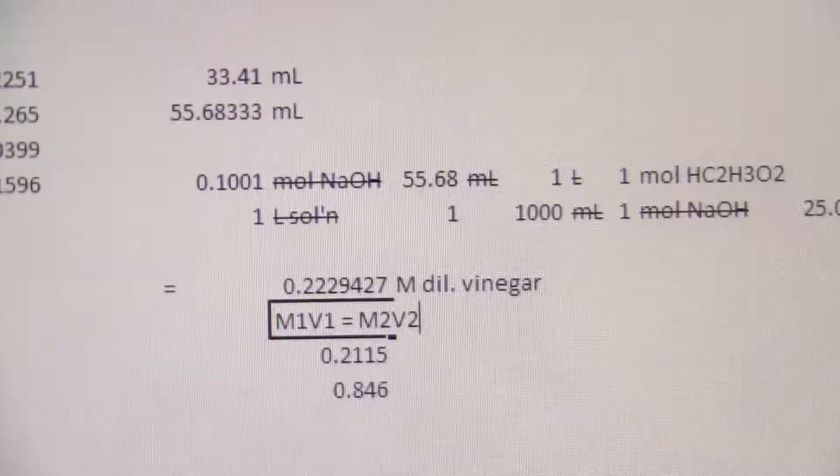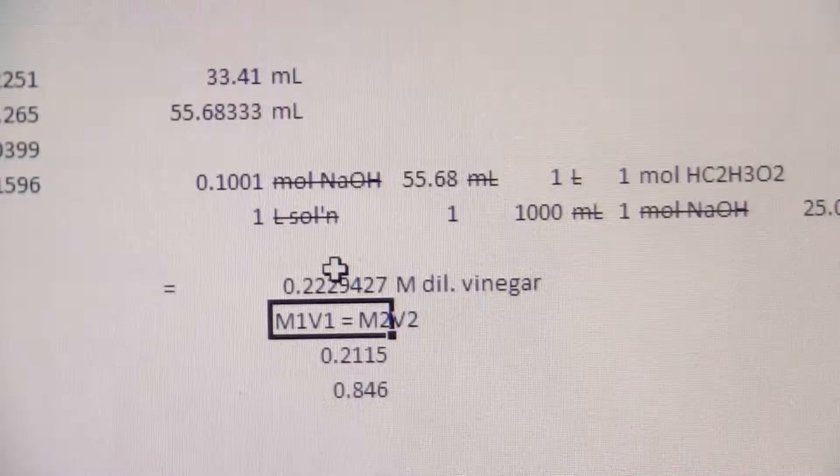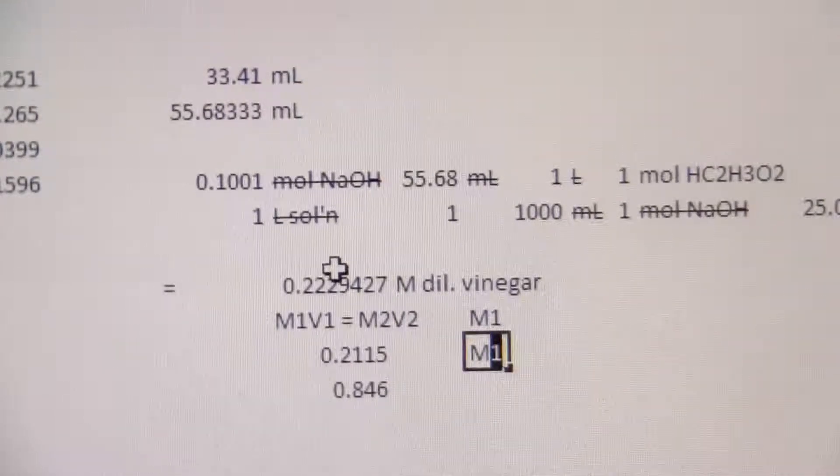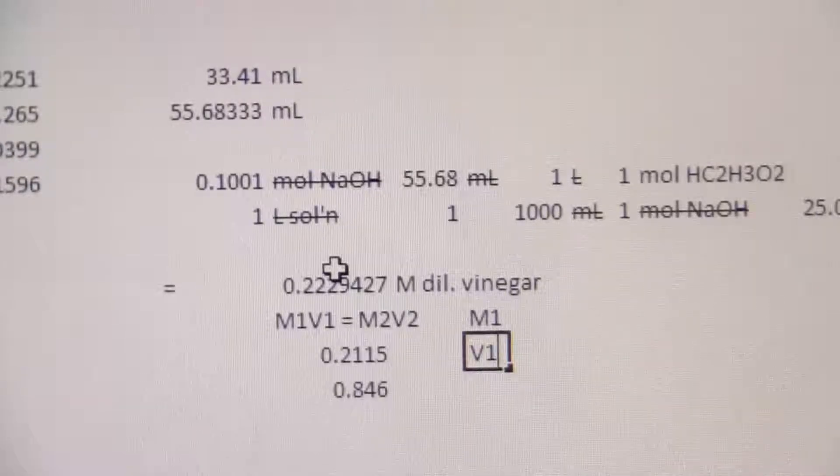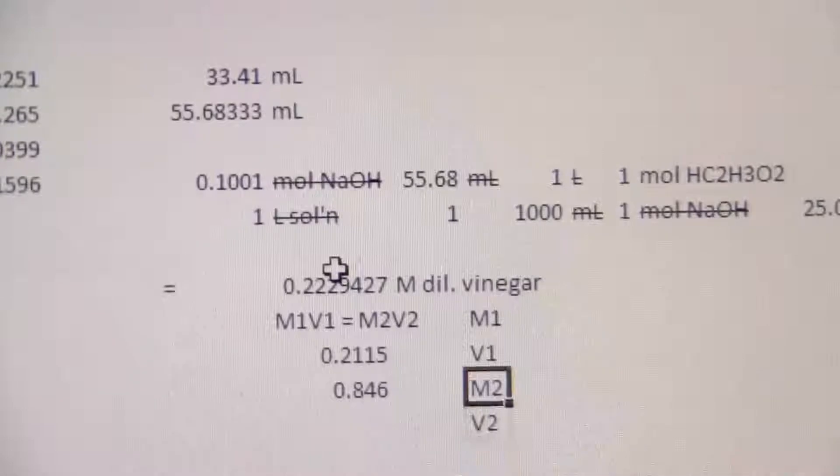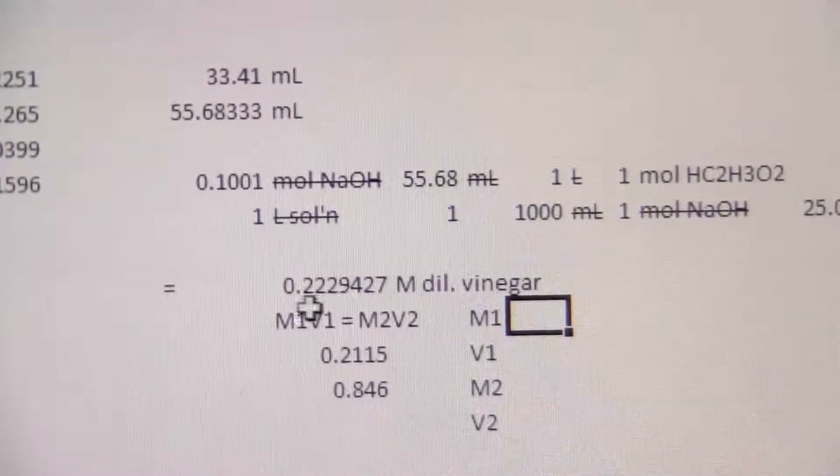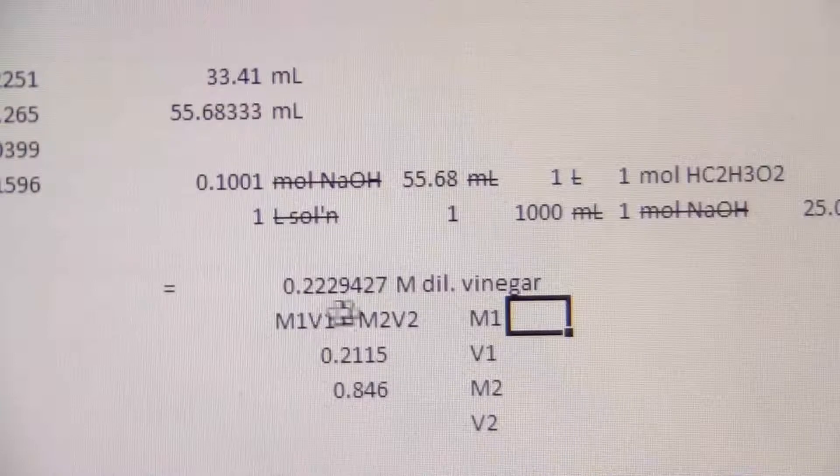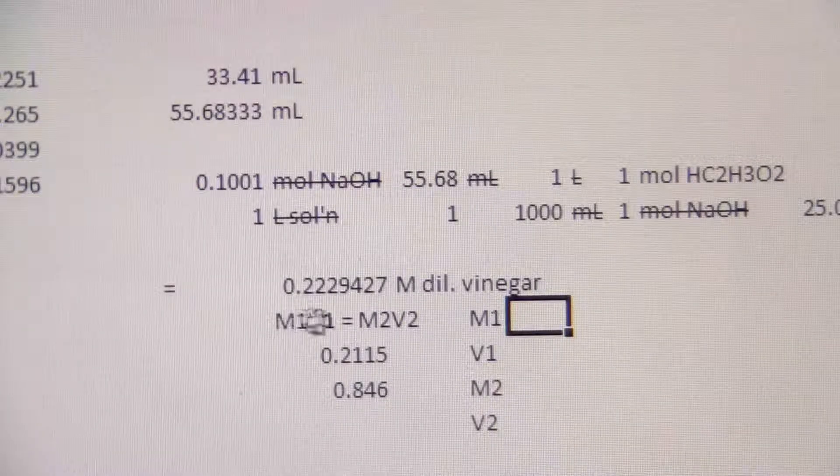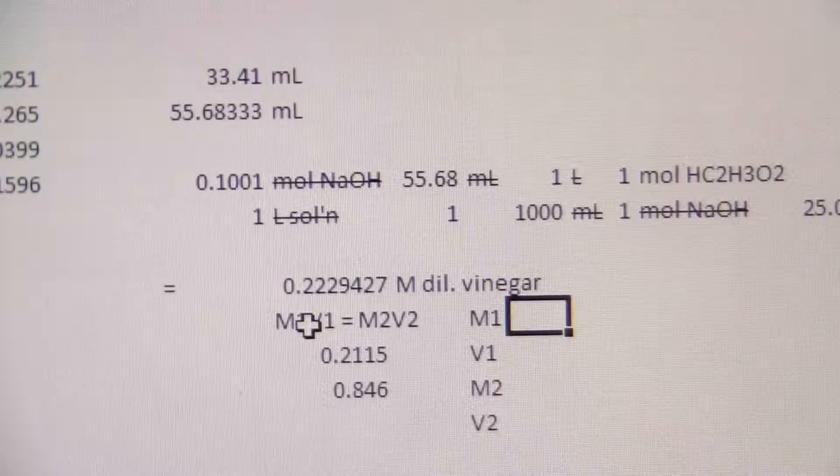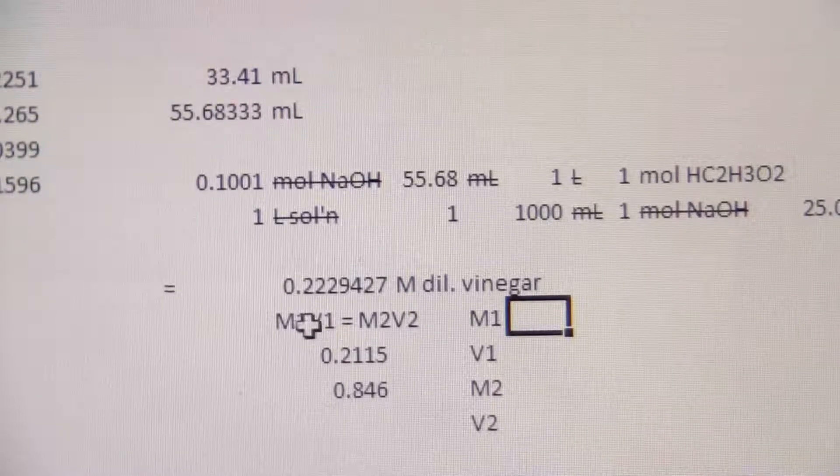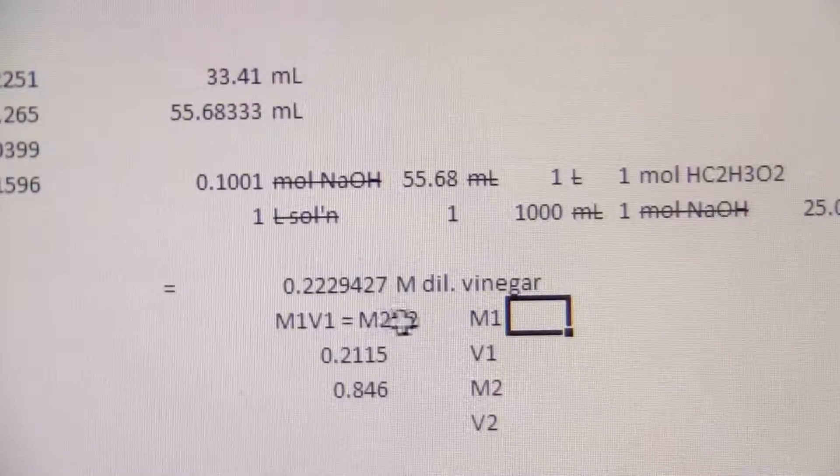And what are these values? M1, let me just put them in here like this, and M2 and V1, V2. M1 is my initial molarity, which I'm going to say let's let this side be the concentrated or the normal vinegar, and then here's my diluted vinegar that I titrated.